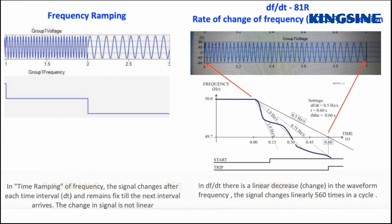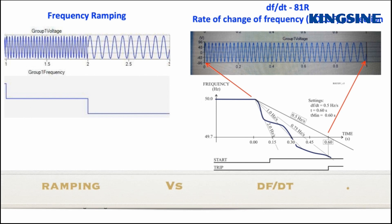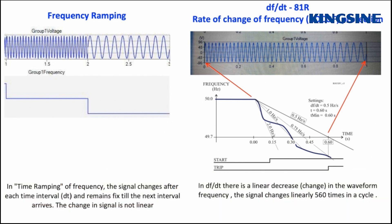Have we ever figured out the difference between the ramping and DF by DT of signals? Let's try to understand by looking at the waveform in both conditions. On the left side of this screen, we have shown the frequency ramping of voltage signal. At the right side of this screen, we have shown DF by DT signal waveform.